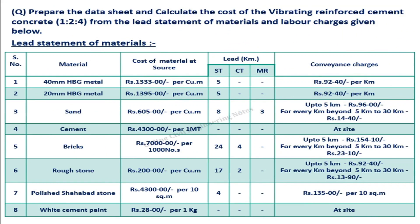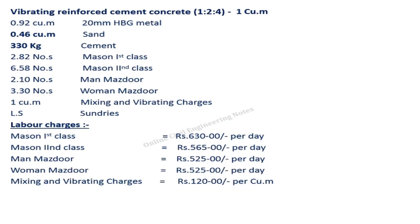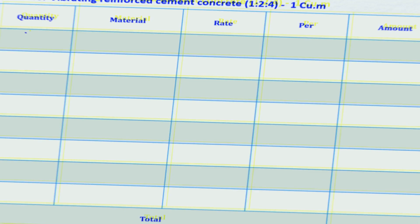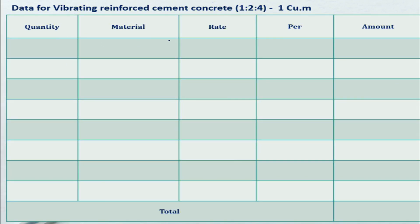Prepare the data sheet and calculate the cost of vibrating reinforced cement concrete 1 to 4 from the lead statement of materials and labour charges given below. The lead statement consists of different materials used for VRC. Prepare a table consisting of quantity, material, and rate per unit. Write down the quantity and materials of different materials used for vibrating reinforced cement concrete 1 to 4.